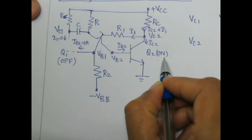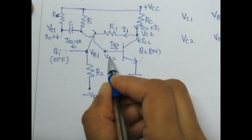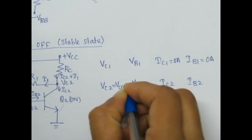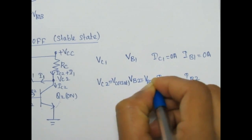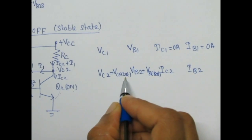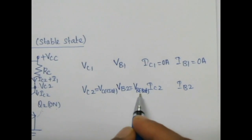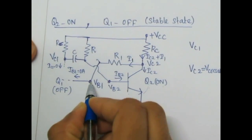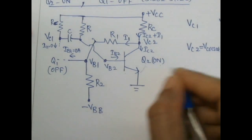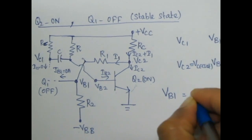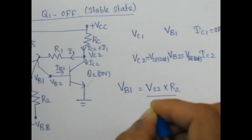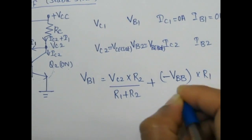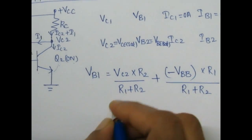When Q2 transistor is on, its collector voltage will be equal to VCE sat and its base voltage will be equal to VBE sat, since the emitter is directly connected to ground. So VCE2 is equal to VCE sat and VB2 is equal to VBE sat. For a silicon transistor, VCE sat is approximately equal to 0.2V and VBE sat is approximately equal to 0.7V. For VB1, we know VC2 and minus VBB, so by applying superposition principle: VB1 = (VC2 × R2)/(R1 + R2) + (−VBB × R1)/(R1 + R2).